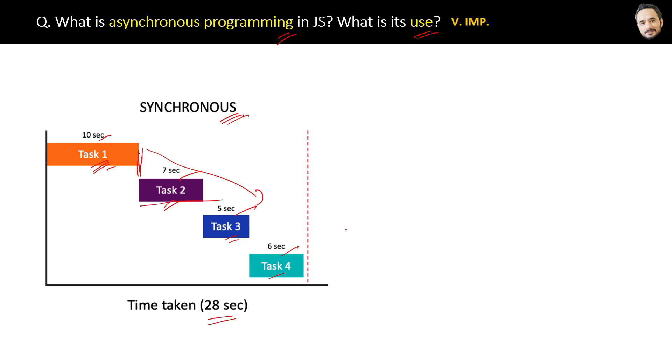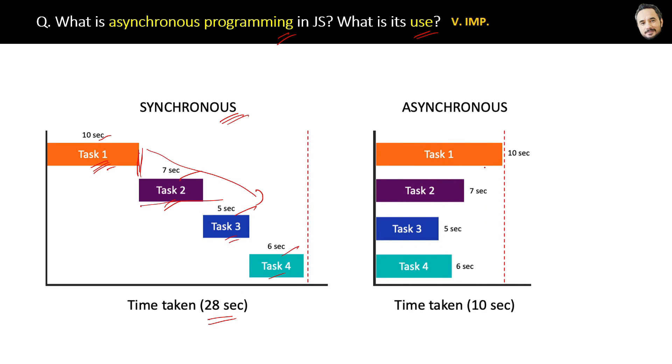But in asynchronous operations, the functions or tasks can execute concurrently, or you can say parallely. Here Task 2 will not wait for the completion of Task 1. Therefore, in asynchronous programming, the total time taken by the same tasks is lesser than in synchronous programming.